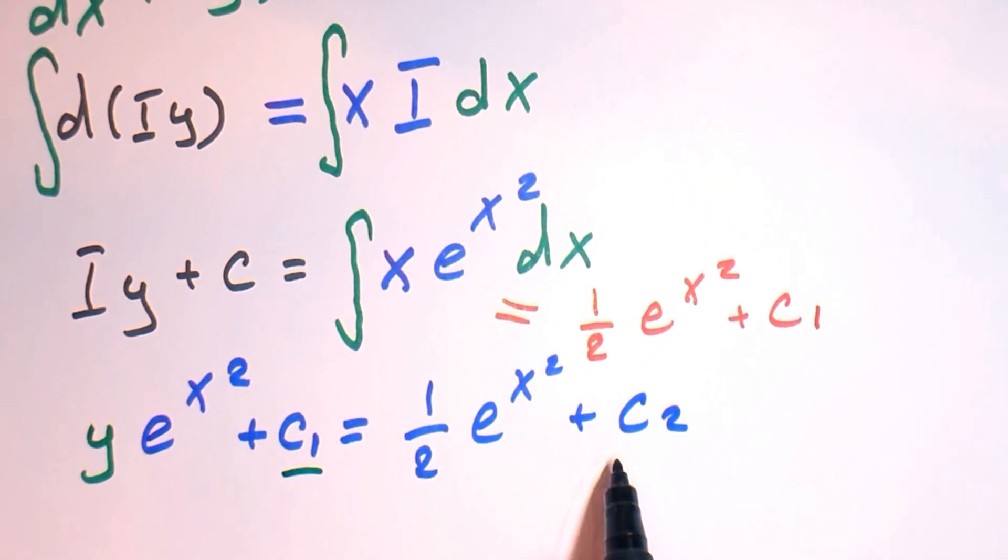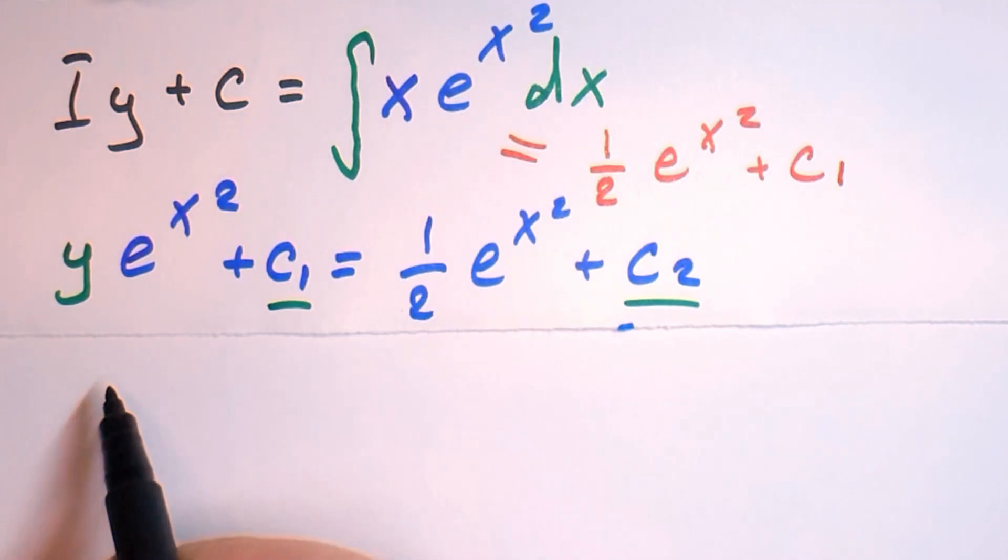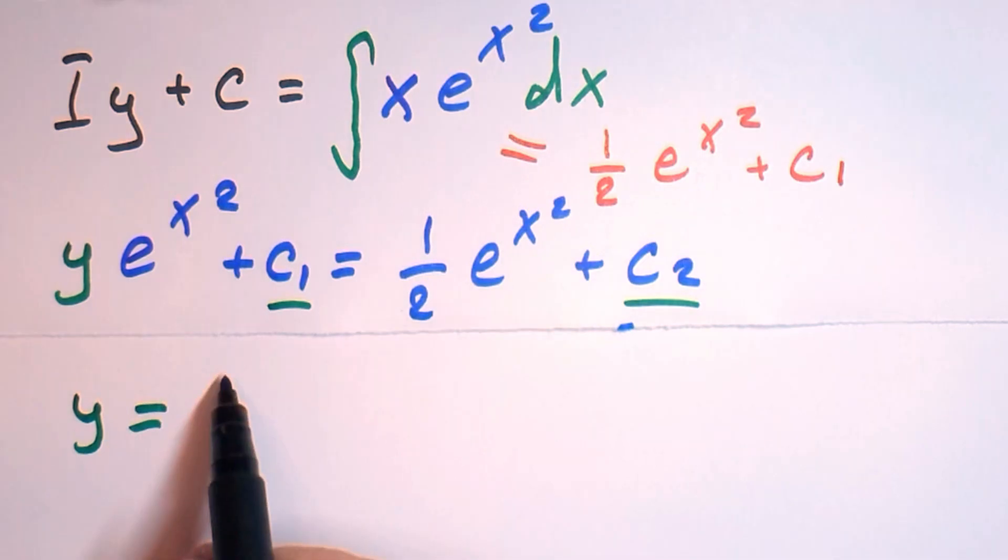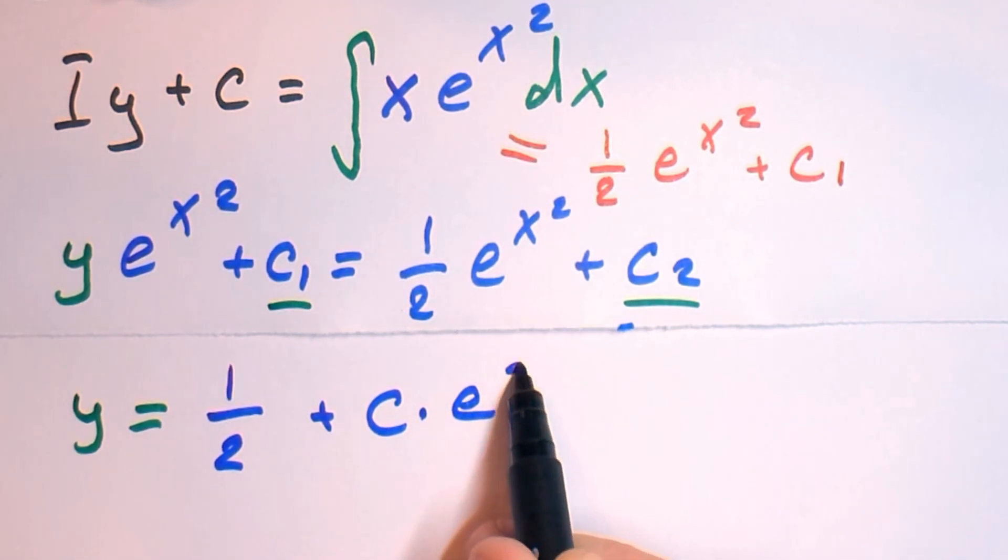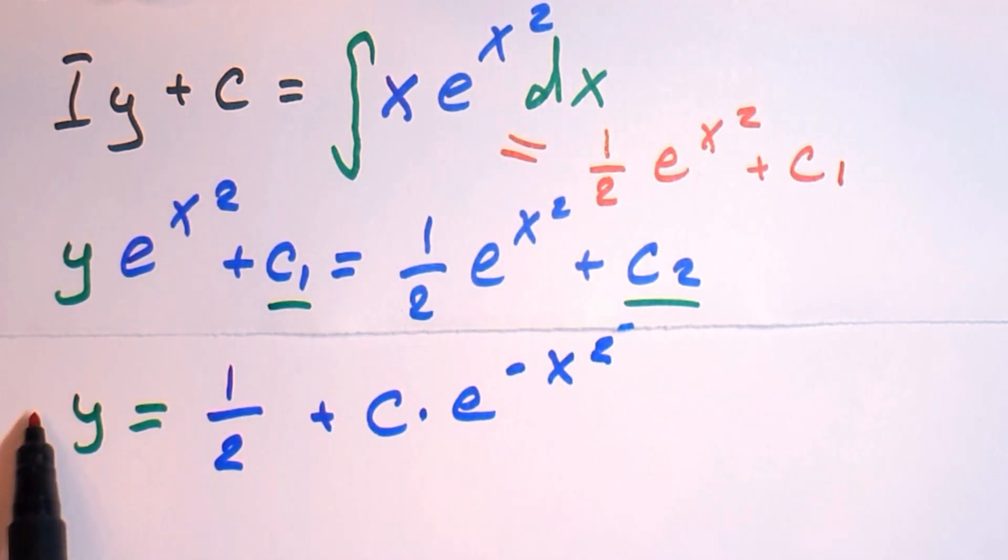So we can group the constants and put y on the left part of the equation. And it will be y equals one half plus c times e to the power minus x squared.